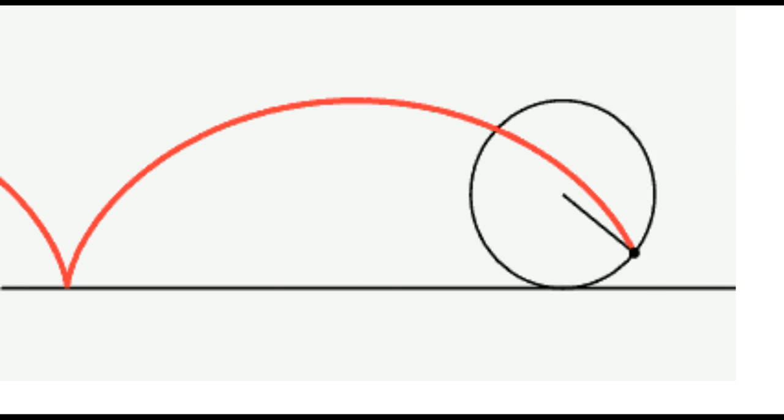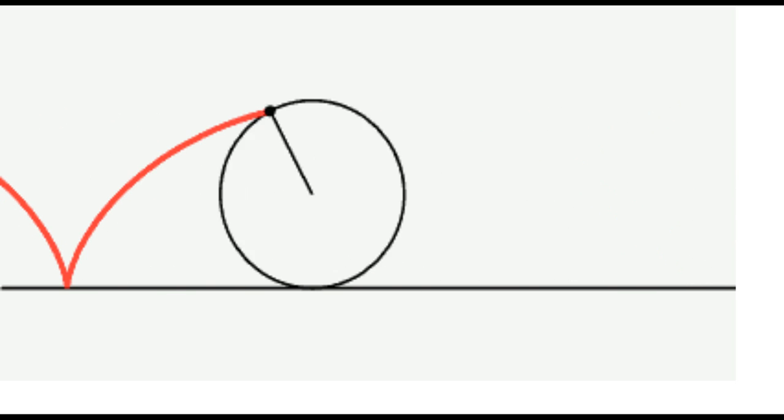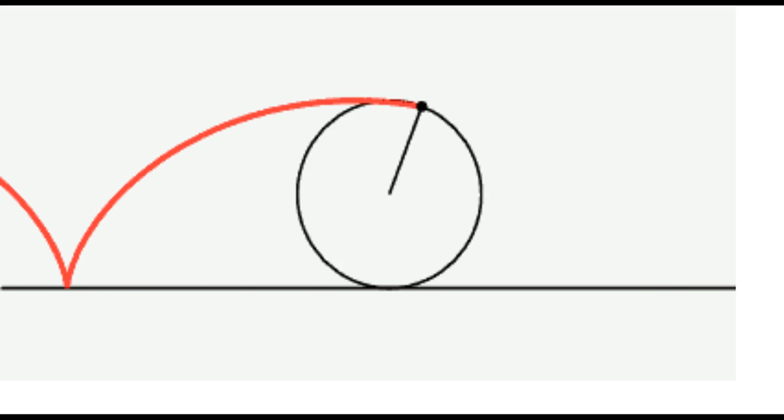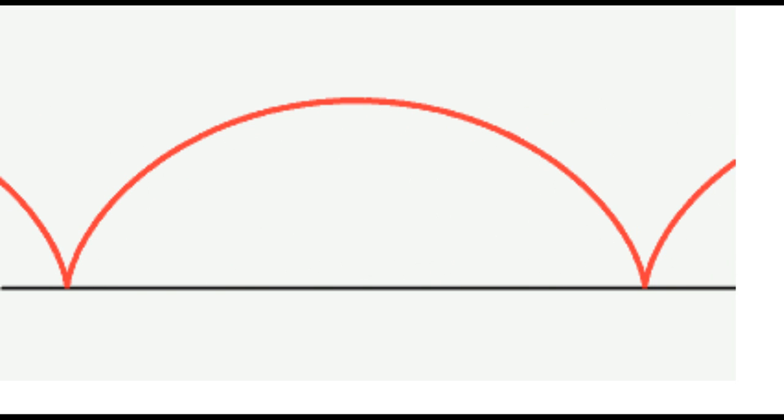That circle kind of looks like a cartwheel, maybe the wheel of a handcart being pulled by a Mormon pioneer or something like that. As this cartwheel spins, imagine we tie a handkerchief to the cartwheel.